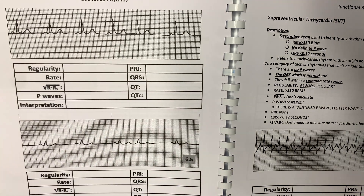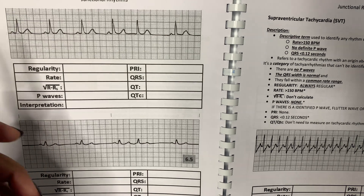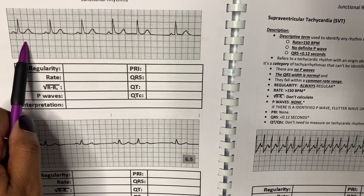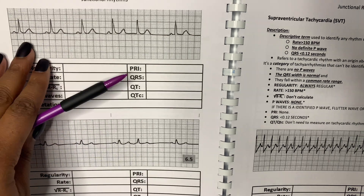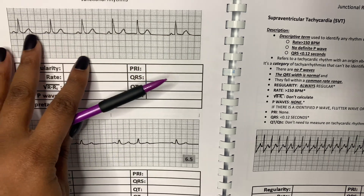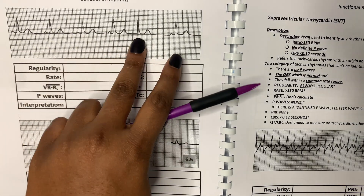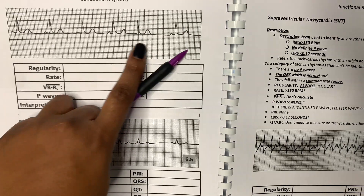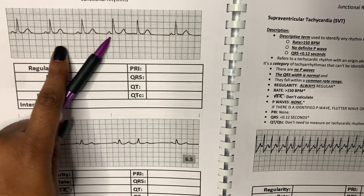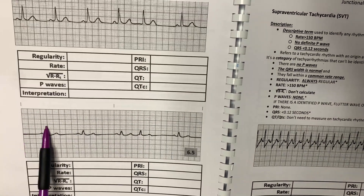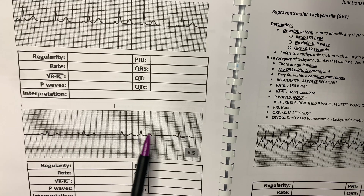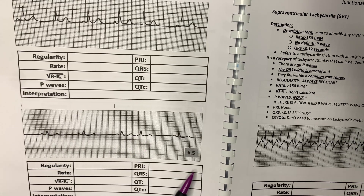Another hallmark with PJCs is that it does not disrupt the ventricular conduction pattern — meaning the QRS. If you look at this PJC, the QRS is exactly the same as the rest of the QRS complexes. And if you look at this rhythm, same thing — the QRS does not change. It's just the P wave.